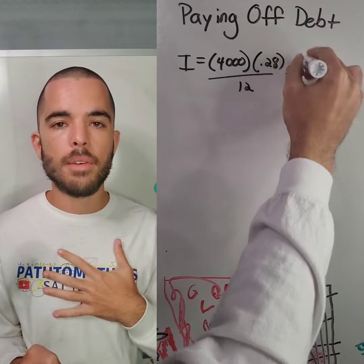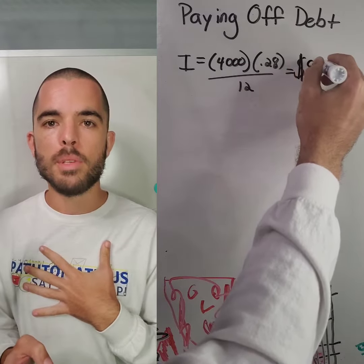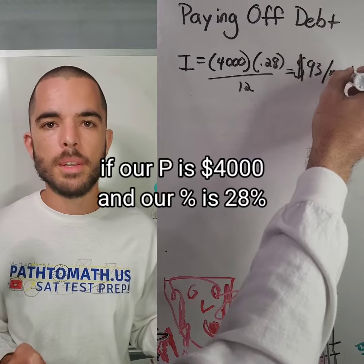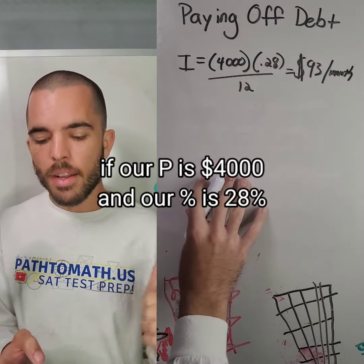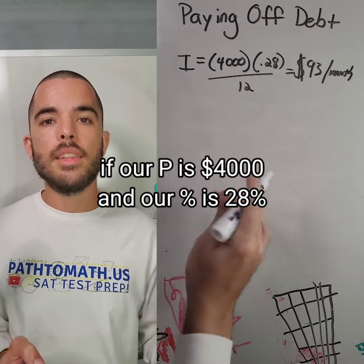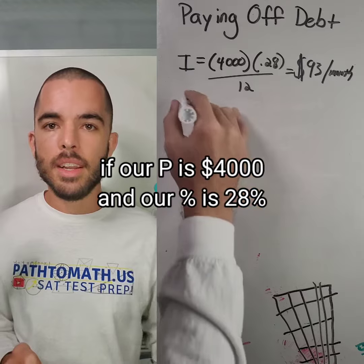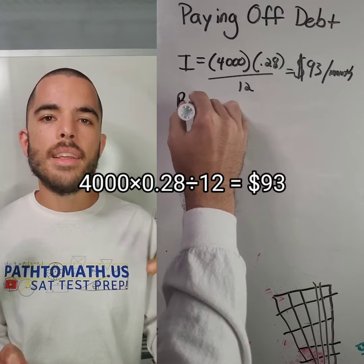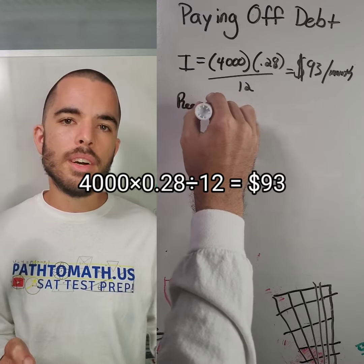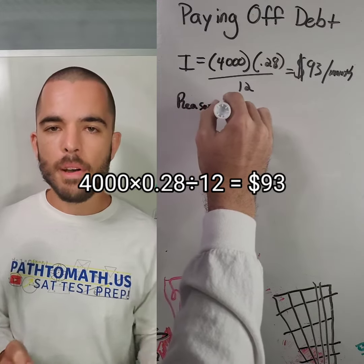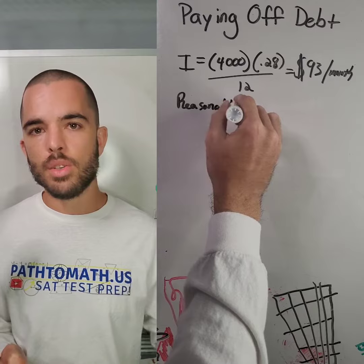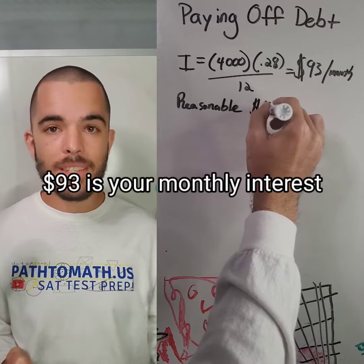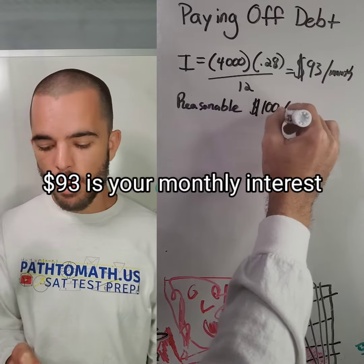For simple purposes, let's say our APY for our credit card is 28%, and the debt we're currently in is $4,000. You're going to be adding on $93 every month in just interest, and that's going to be added to your debt that you already owe.